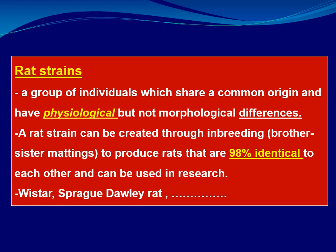A strain is a group of individuals which share a common origin and have physiological but not morphological differences. Rat strains can be created through inbreeding or outbreeding. Inbreeding involves mating between brother and sister, and through inbred strains we can produce rats which are 98% identical in their genes. For example, Sprague-Dawley rats and Wistar rats can have both inbred and outbred varieties.